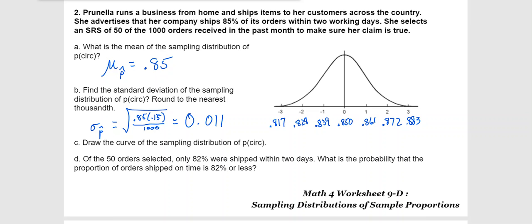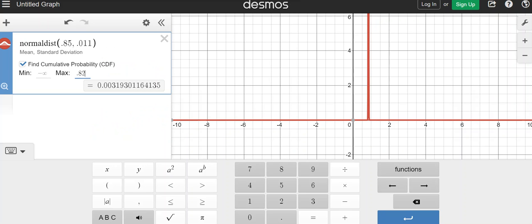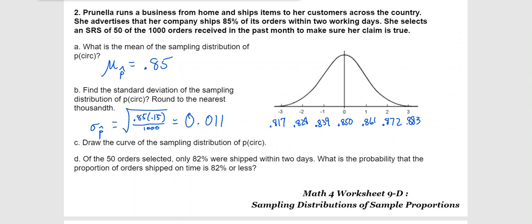Let's see what Desmos does. On Desmos, wow, it was even less than one percent. You would call this 0.3% that's less than 82%. The probability is 0.3%.